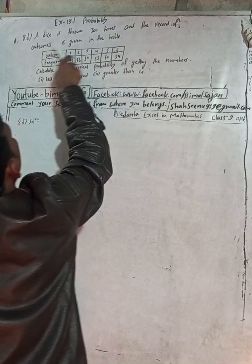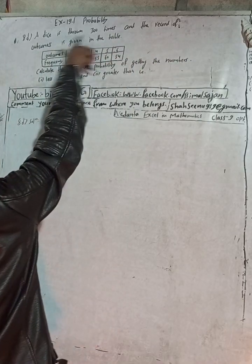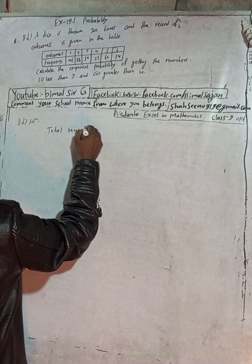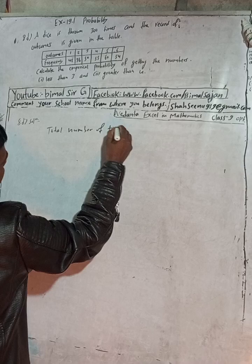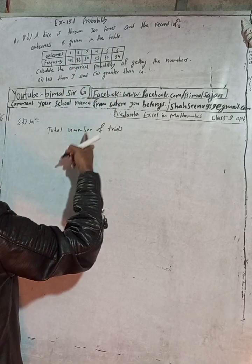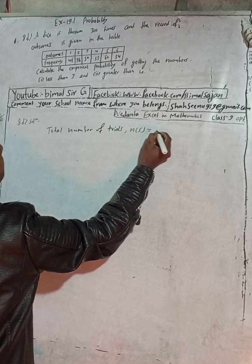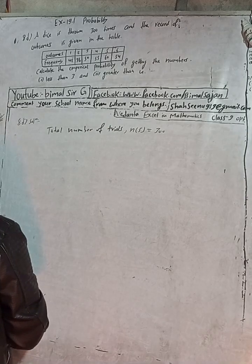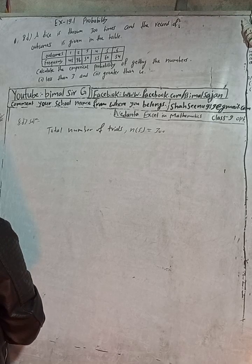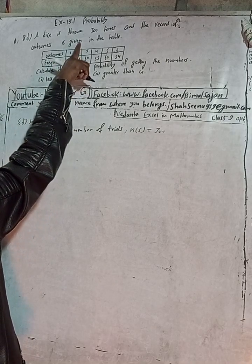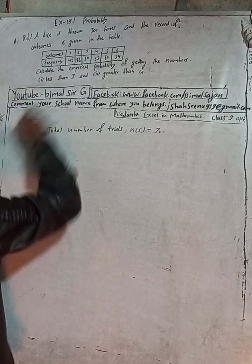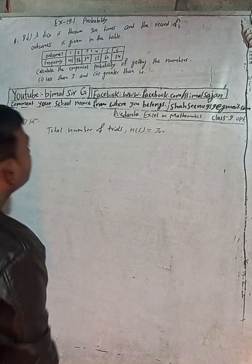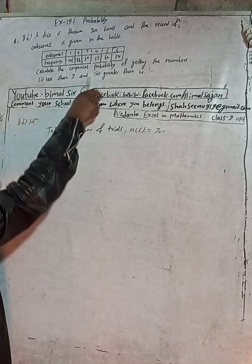The question is: a die is thrown 300 times and the record of outcome is given in the table. So the total number of trials is 300 — that is your sample, n(S) = 300. The outcome table shows: 1 appeared 30 times, 2 appeared 36 times, 3 appeared 50 times, 4 appeared 35 times, 5 appeared 60 times, and 6 appeared 54 times. Now calculate the empirical probability.